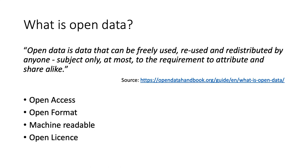There are a number of useful definitions. One is from the Open Data Handbook, which says open data is data that can be freely used, reused, and redistributed by anyone, subject only at most to requirements to attribute and share alike. The four key elements are access, format, machine readability, and the open license — the freedom to use the data for another purpose, commercial or non-commercial.